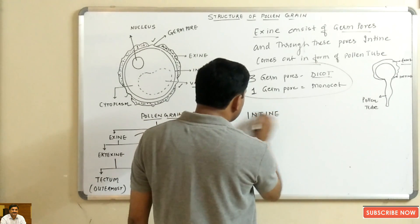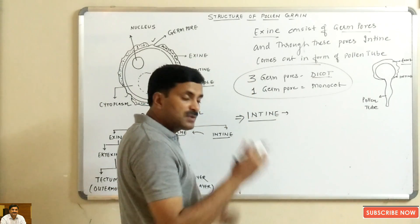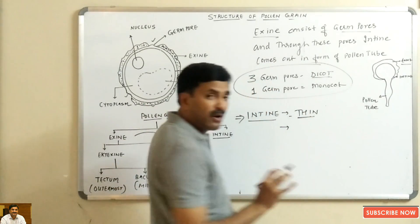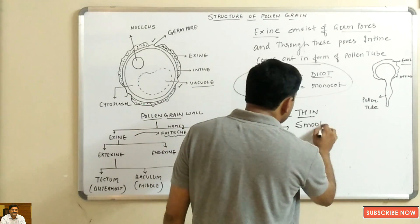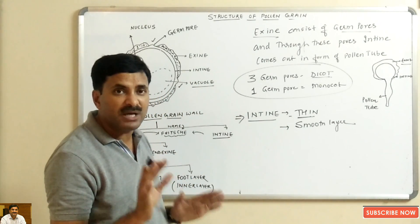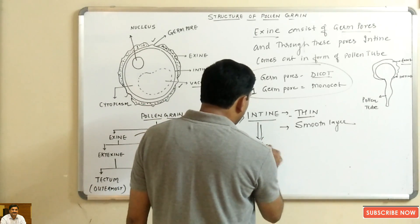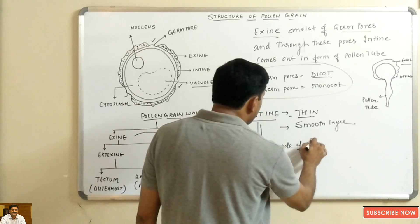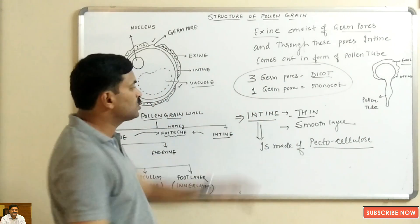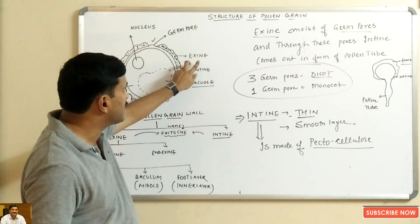The second layer surrounding the pollen grain is the intine layer. The big difference between the intine and the exine is that the intine is present just below the exine, and it is a thin, smooth, and non-ornamented layer. The exine was made of a fatty substance called sporopollenin, but the intine is made of pectocellulose — pectin plus cellulose equals pectocellulose.